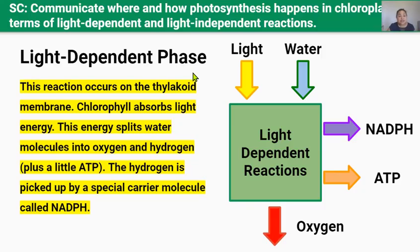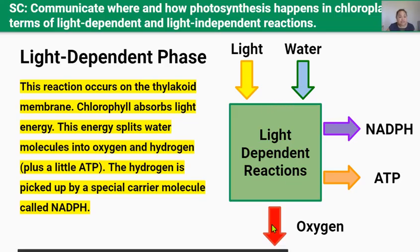Here in the thylakoid membranes, light energy is absorbed by a pigment called chlorophyll, found within the thylakoid membranes. The box shown represents the thylakoid membranes and the chlorophyll inside — that's why it's green. The light energy is used to split water into hydrogen and oxygen, and it also produces a small amount of ATP.